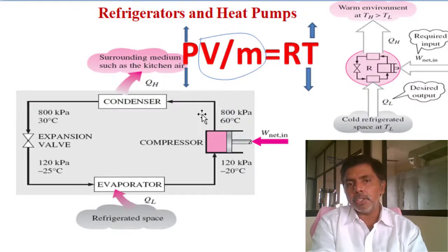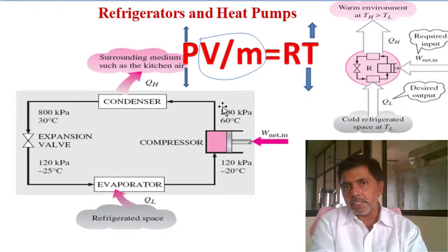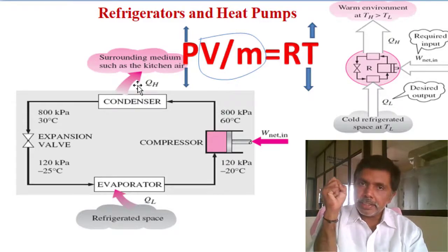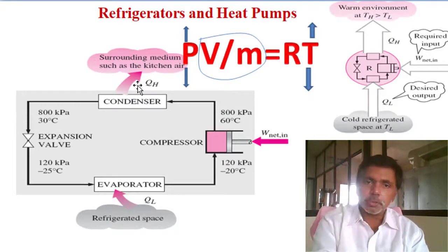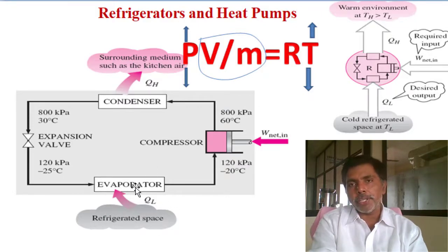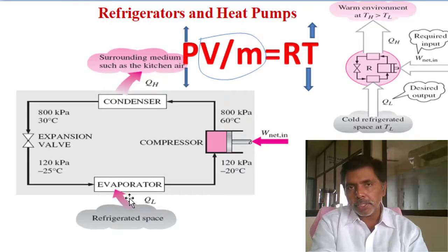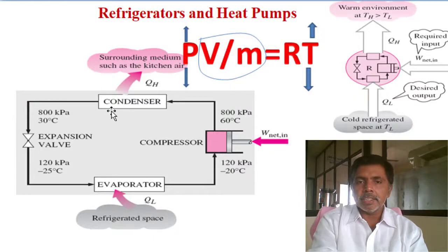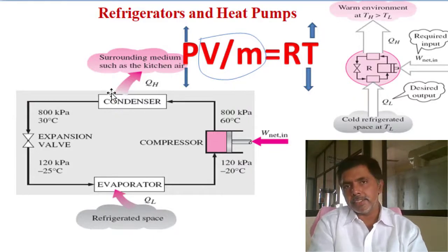The ambient temperature is maximum 45°C; here we are reaching 60°C. Then heat rejection takes place at the condenser. Whatever heat was absorbed at the evaporator plus whatever work we supplied in the compressor is combined and rejected at the condenser.